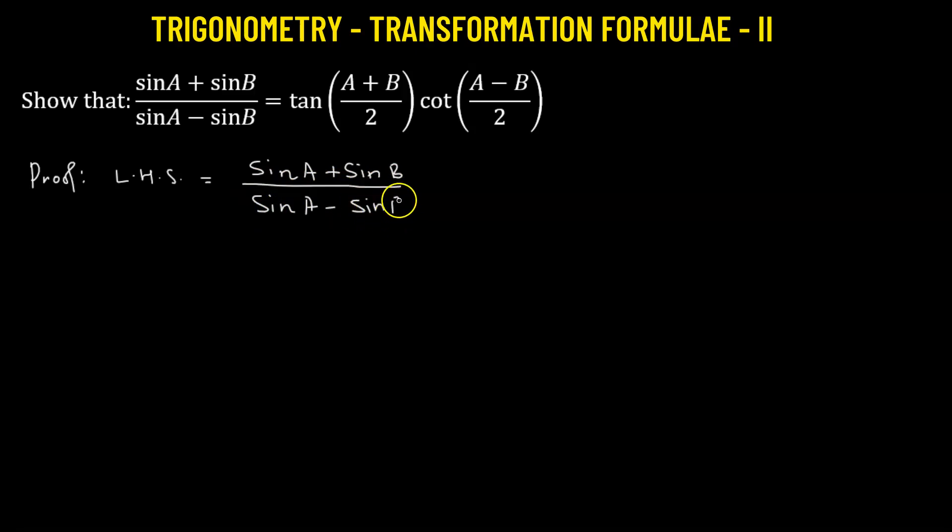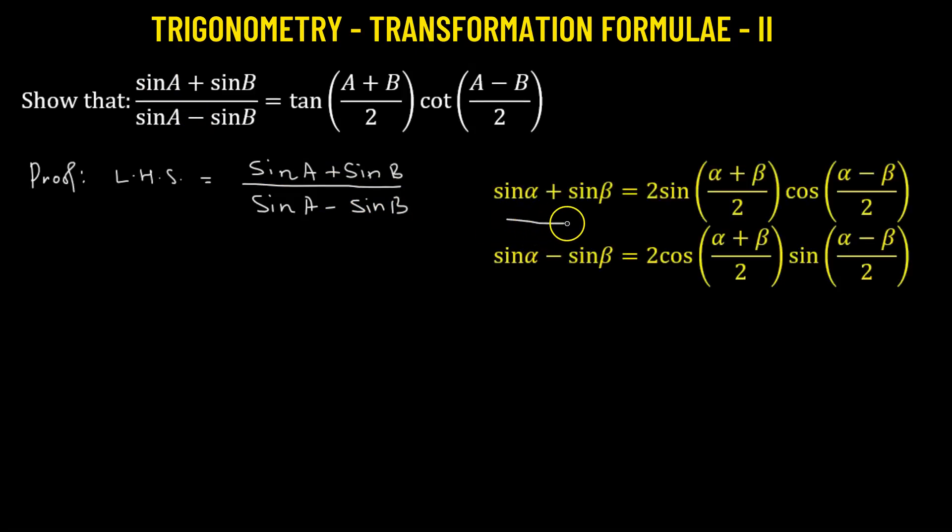Now what we can do here is we can use the transformation formula. Let's state the transformation formula that we will use here. So if we have the sum of two sine functions, that simply transforms to the product of a sine and cosine. And the difference of the sine function also transforms into a product of a cosine and a sine function.